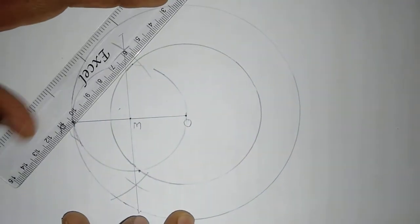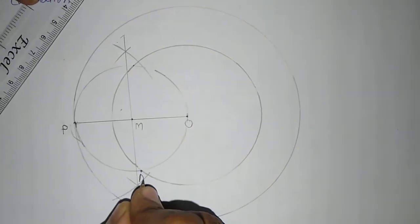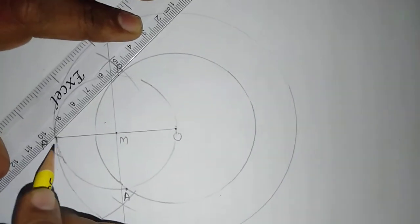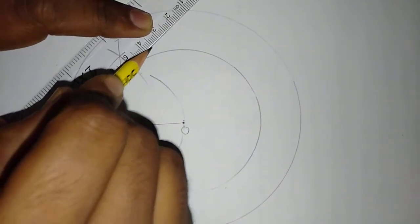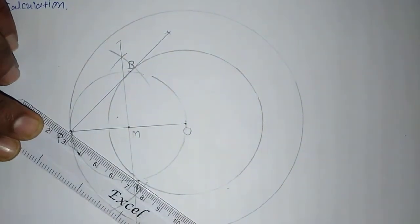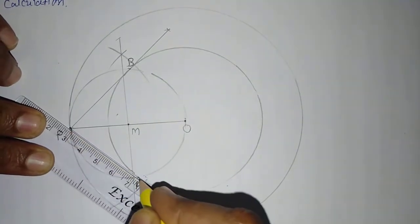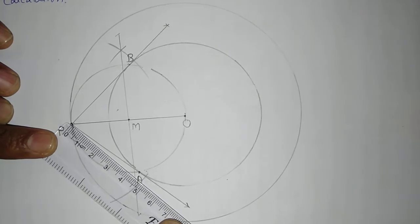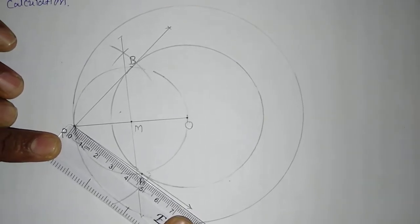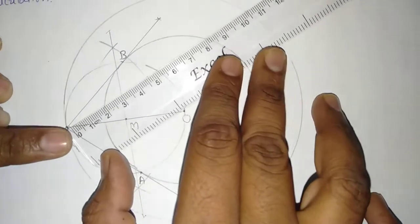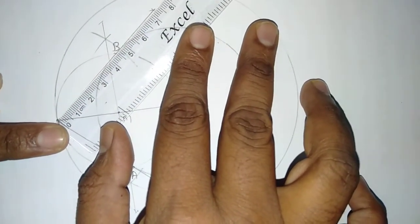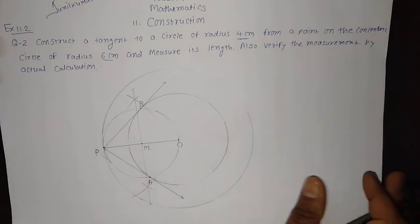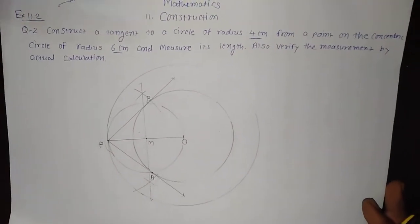From those intersection points we will draw the tangent rays. Let me name these two points: this one is A and this one is B. I will draw the rays initiated from point P and passing through B, and also through A — that is, rays PB and PA. We need to measure the length of the tangent. You can see it is approximately 4.4 cm, and similarly the other tangent is also approximately 4.4 cm. We need to verify this by actual calculation and write it in the form of an irrational number.